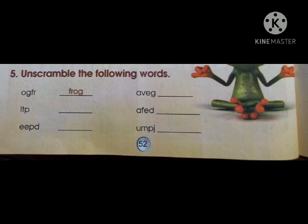The first one is O, G, F, R. It is not making any word or sense, so we will write it correctly: F, R, O, G — frog. It is the word 'frog.'